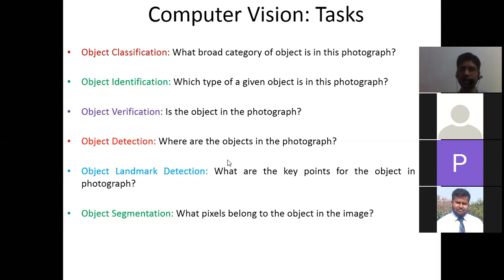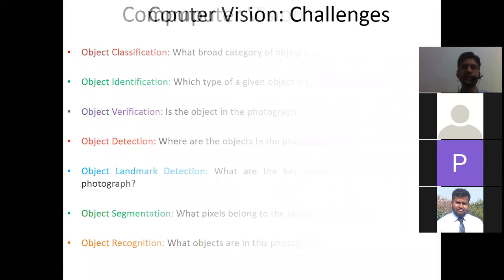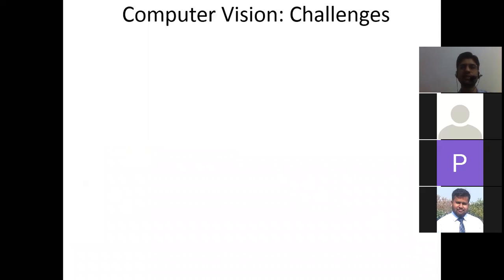Object recognition determines what objects are in the photograph and where they are — these are the things done by computer vision.